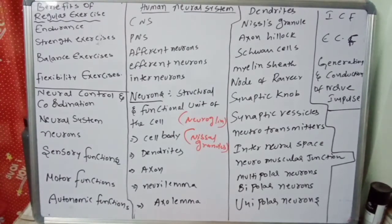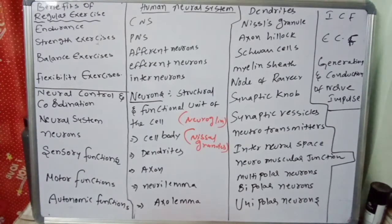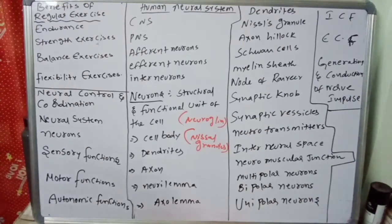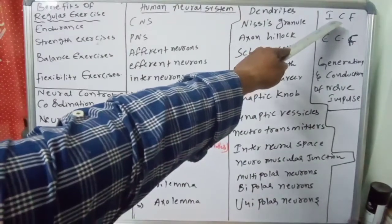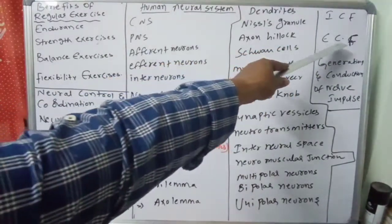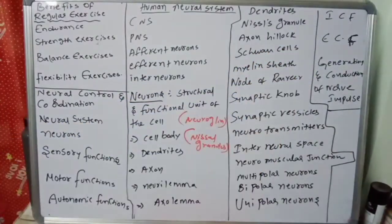Next is the generation and conduction of nerve impulses. The detailed structure of nerve impulse will be studied in the next class. This section deals with how nerve impulses are produced and conducted in our body. Inside the axon, within the axolemma, there is cytoplasm called intracellular fluid (ICF). Outside the axon is the extracellular fluid (ECF).